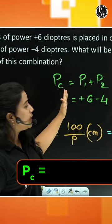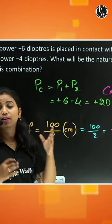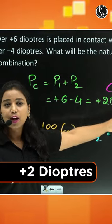The formula is: power of combination equals power of first lens plus power of second lens. Substituting the values, we get the final power as +2 diopters. Since it's positive, the resulting lens is a convex lens.